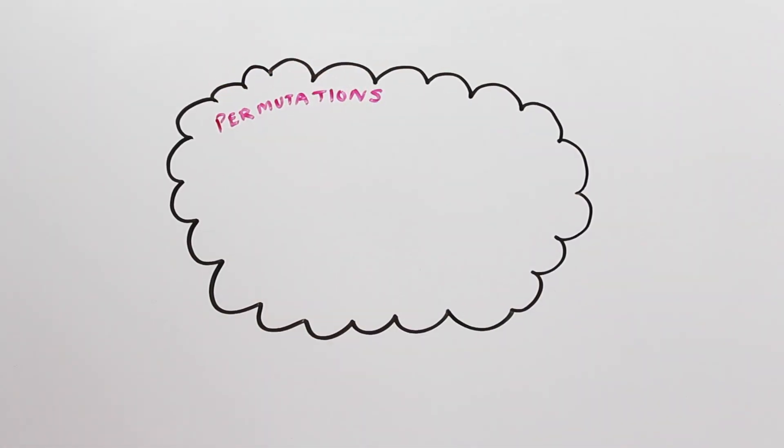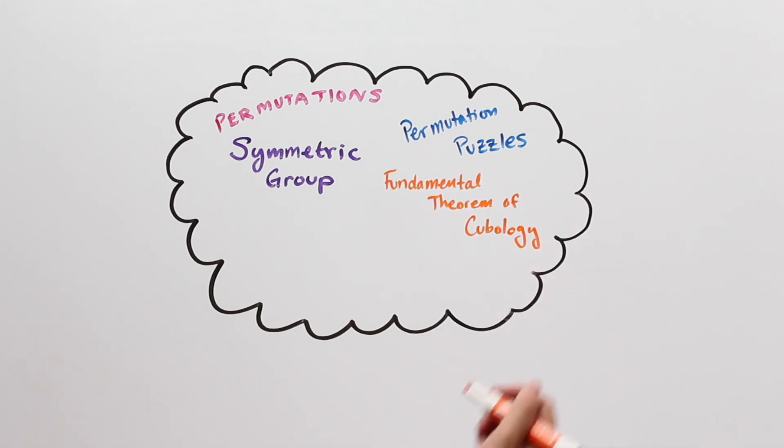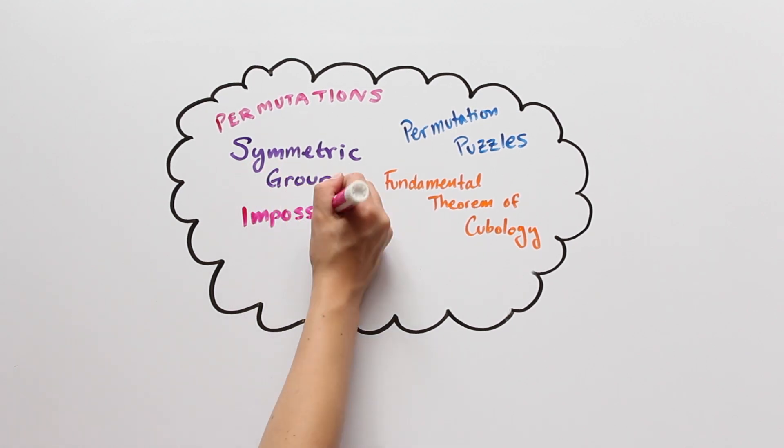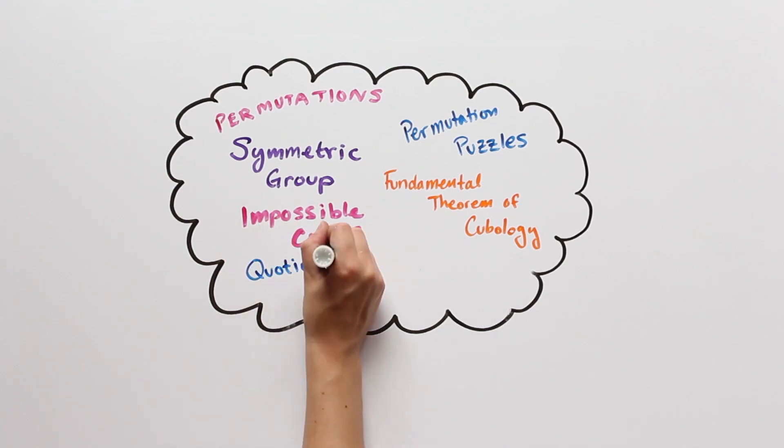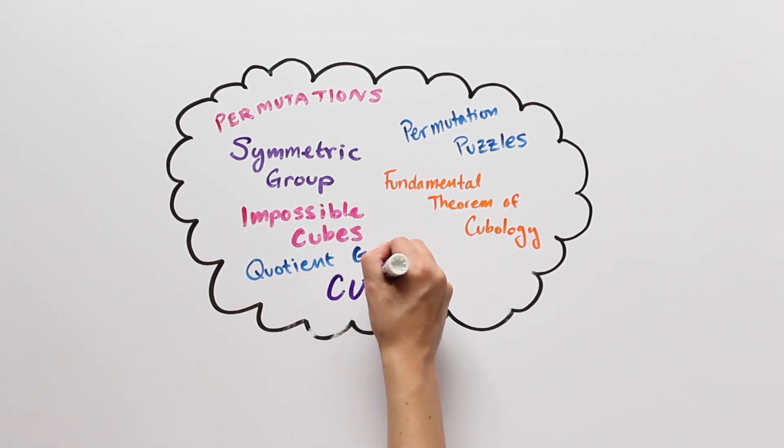Okay, well, we've come quite a ways over the past three videos. We started with permutations, the symmetric group, and permutation puzzles. Then we've learned about the fundamental theorem of cubology and why there are impossible cubes. Finally, we've learned about the different types of impossible cubes, the cube group, and quotient groups.